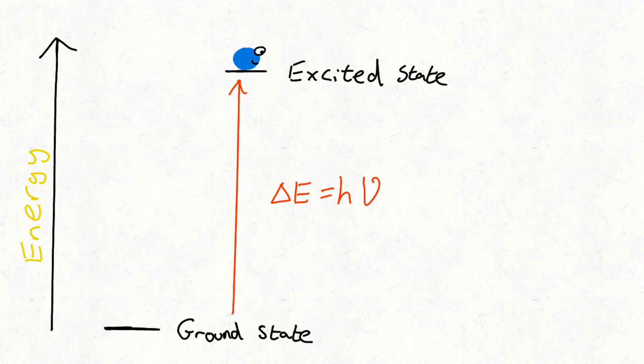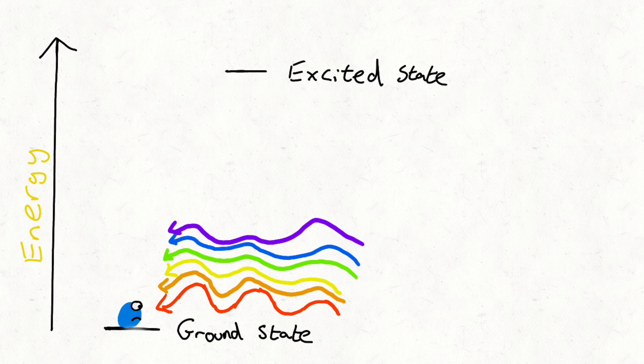Since these energy levels are fixed, only a specific wavelength of light is absorbed. The electron can't be in between. In this example, red light is absorbed.